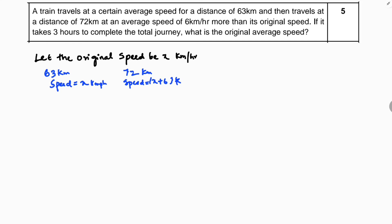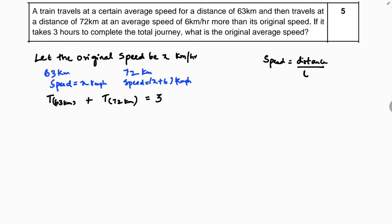For this total journey, it took 3 hours. So the time to cover 63 km plus the time to cover 72 km equals 3 hours. From the speed formula — speed is distance upon time — time is nothing but distance upon speed.